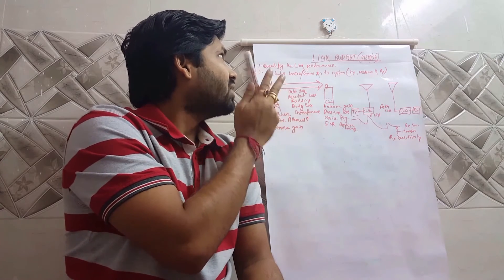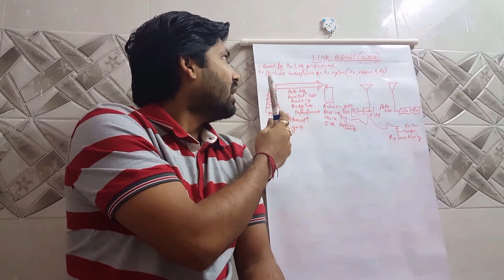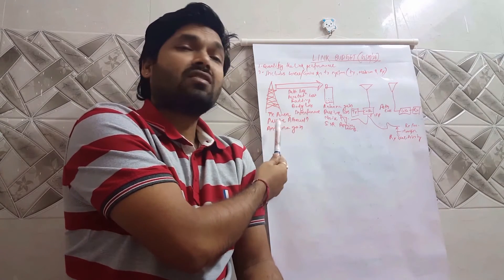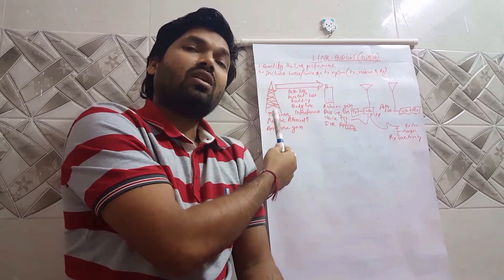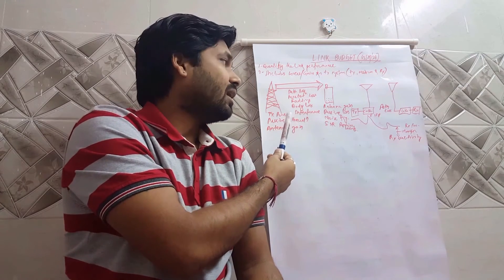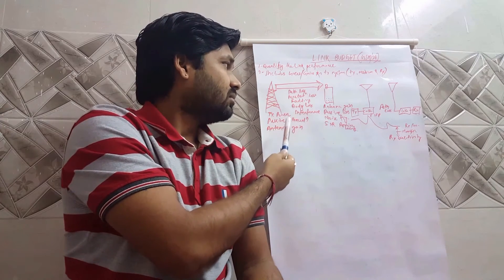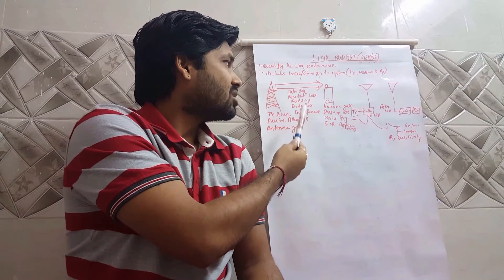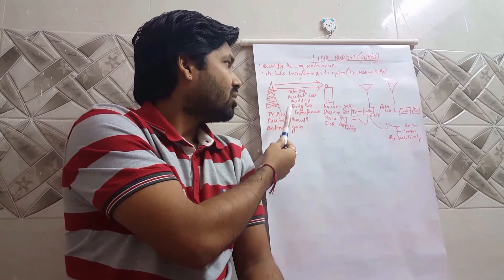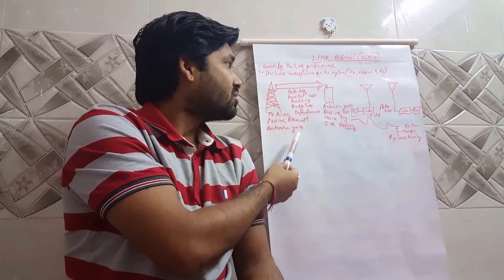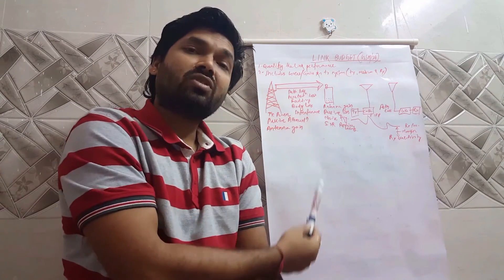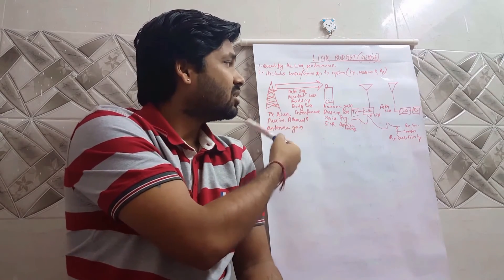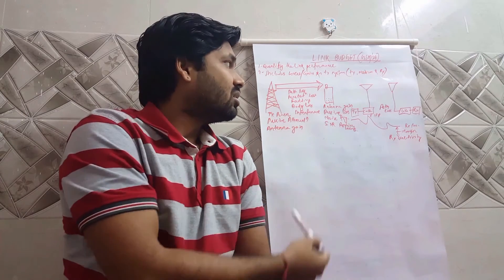We use link budget for two main reasons: one is quantifying the link performance, and to know the link budget exactly, we need to understand the transmitting end, receiving end, and the medium — all the associated losses, gains, and parameters. This also includes the radio behavior such as reflection and diffraction, which we can factor into the link budget.